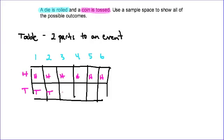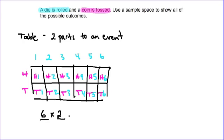I'll also write the numbers in: 2, 2, 3, 3, 4, 4, 5, 5, 6, 6. By looking at this we can see that there are a total of 12 different outcomes. You could actually calculate this right away because there are 6 outcomes for the first part of the event and 2 outcomes for the second part, giving us 6 times 2 equals 12 outcomes. This table neatly shows what all 12 of those outcomes are.